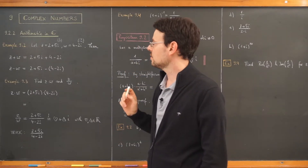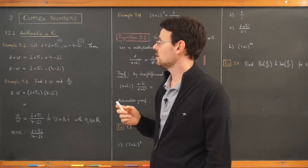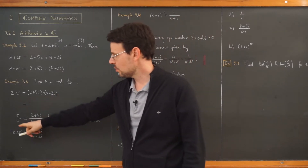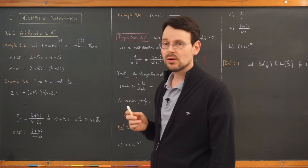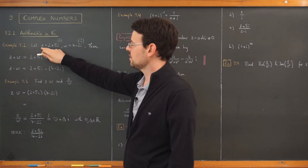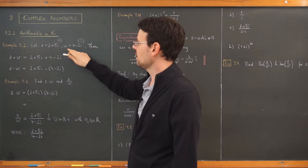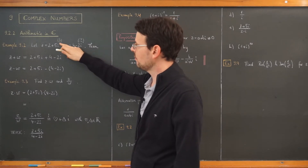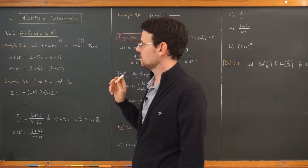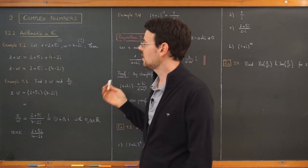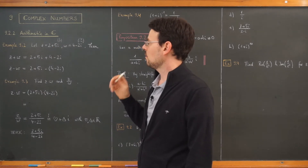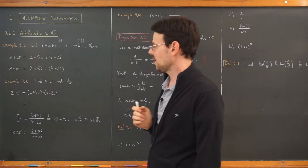Welcome everybody. In this video we're going to learn how to do arithmetic in the complex numbers — meaning how to add, subtract, multiply, and most difficultly how to divide complex numbers. We'll start with a simple example. Given our two complex numbers z = 2 + 5i and w = 4 − 2i. Remember, this is just another form of how to write two-dimensional vectors, because complex numbers after all are nothing but two-dimensional vectors. But this Cartesian form is much more convenient when doing calculations, especially multiplication and division.